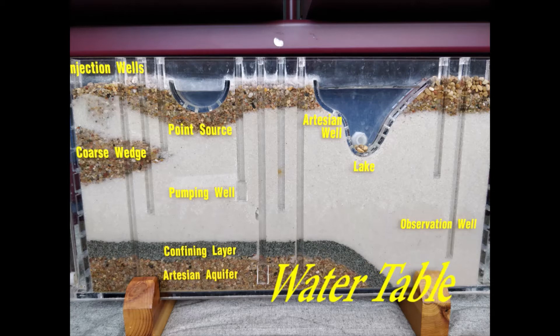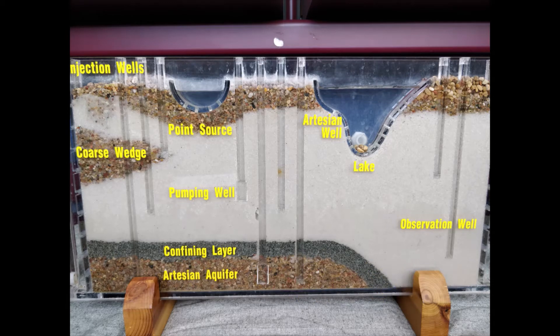Think about the words water and table, then look at the model to make a guess. The water table is the uppermost level of water in the aquifer where any pore space beneath it is filled with water. Right now that spot is about right here.